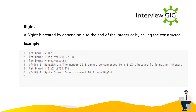BigInt: A BigInt is created by appending 'n' to the end of an integer or by calling the BigInt() constructor. Example: let bNum1 = 10n; let bNum2 = BigInt(10); these are valid. let bNum3 = BigInt(10.5) throws a RangeError — the number 10.5 cannot be converted to a BigInt because it is not an integer. let bNum4 = BigInt(10.5) throws a SyntaxError: cannot convert 10.5 to a BigInt.